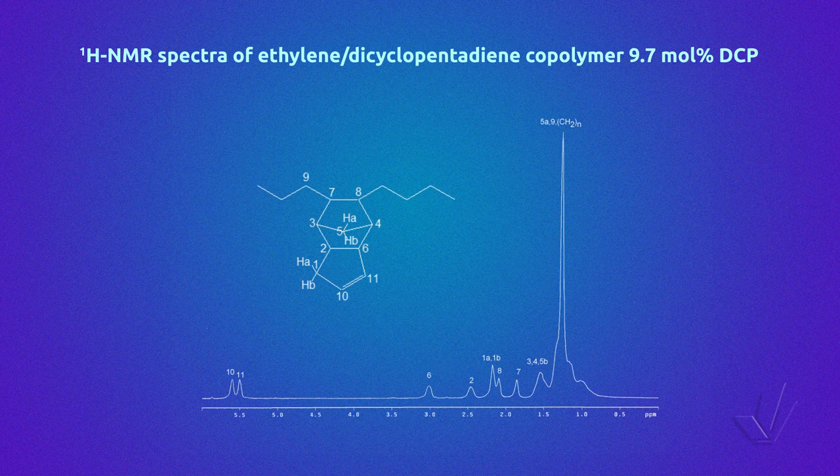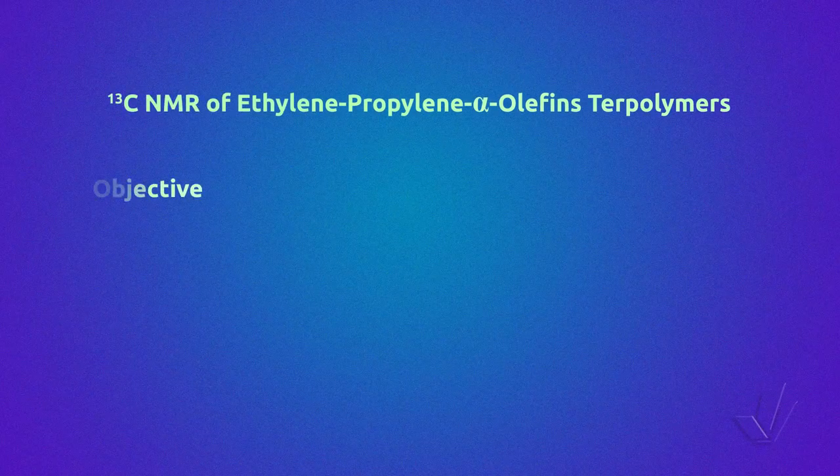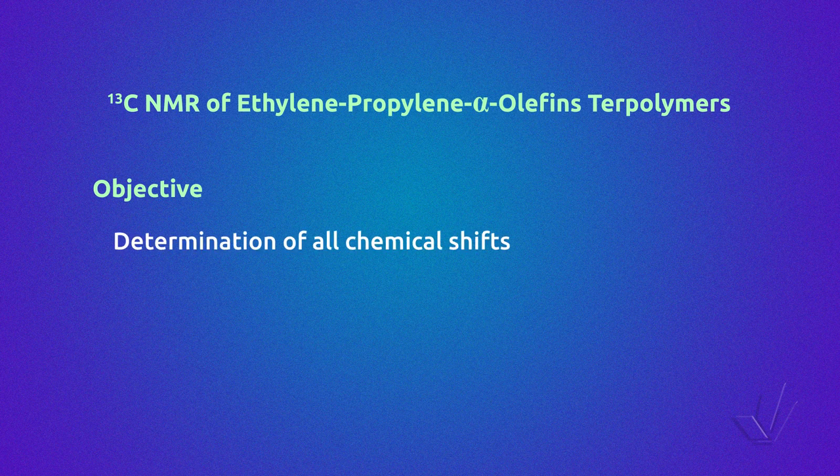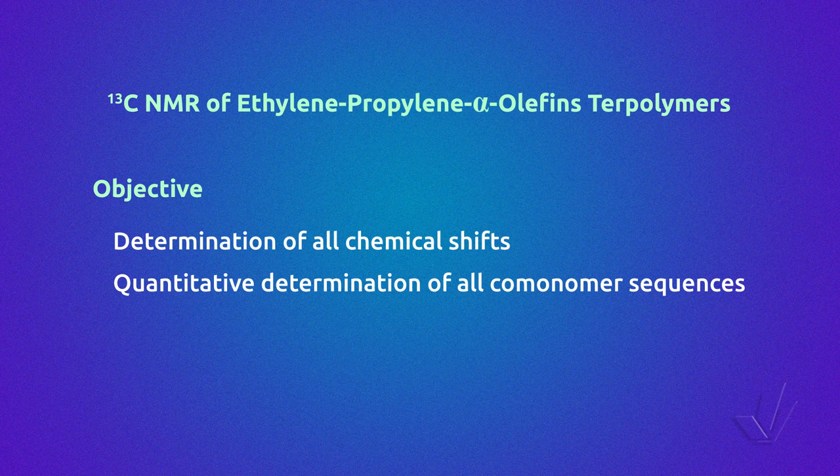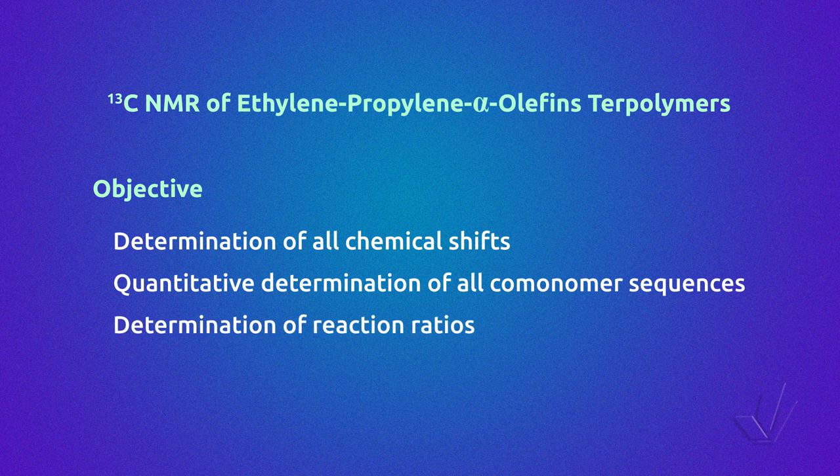Another work that we have done is the study of terpolymers of ethylene, propylene, and alpha-olefins. The ethylene-alpha-olefin copolymers from propylene to octene have been well studied and the chemical shift of each peak determined. However, the terpolymers had been less studied. So the objective of this work was the determination of all chemical shifts, the quantitative determination of all comonomer sequences, and the determination of reactivity ratios and of the average comonomer sequence length. For this study, we had to synthesize homopolymers, copolymers, and terpolymers with different amounts of monomers to help in the determination.